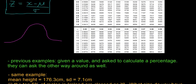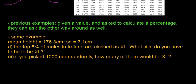Let's look at the questions we have this time around. So in previous examples, we were given a value, such as a height, and we were asked to calculate a percentage from it, like the percentage of people that are below 180 centimeters, for example. But they can ask the other way around as well. So they can give you a percentage and ask you to find a height.